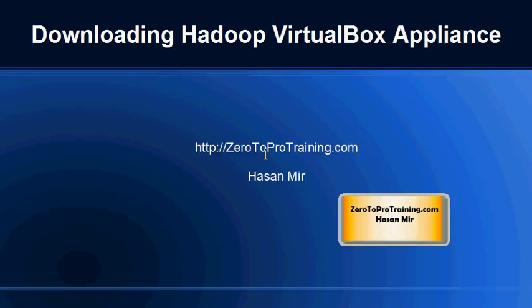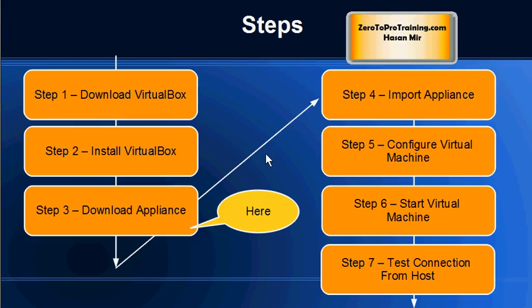Hello, in this session I will talk about downloading the Hadoop VirtualBox appliance. This is Hassan Mir from zerotoProTraining.com. Here are the installation steps to have Hadoop tools up and running on your personal computer. We have completed Step 1 — the VirtualBox software was downloaded. Step 2 is completed as well — the VirtualBox software is installed. Now we need to download the VirtualBox appliance for Hadoop, and that is what we are going to do in this session.